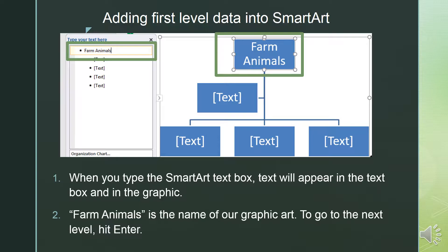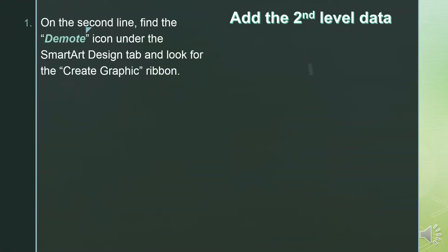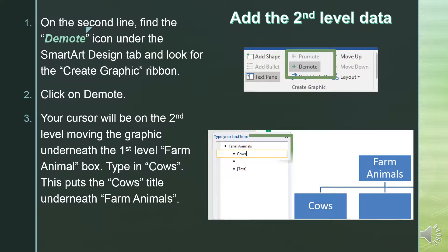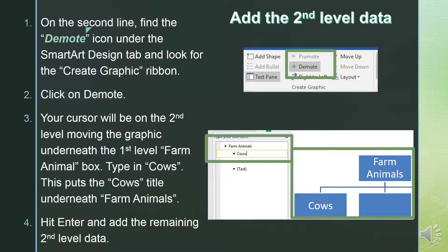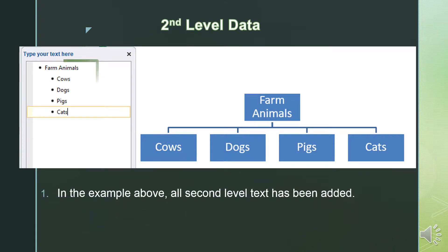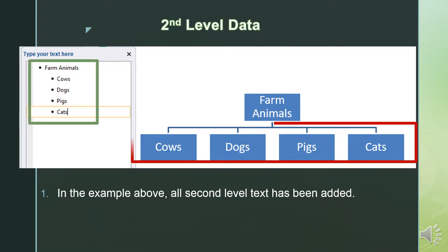To go to the next level, hit enter. On the second line, find the Demote icon under the SmartArt Design tab and look for the Create Graphic Ribbon. Click on Demote. Your cursor will be on the second level, moving the graphic underneath the first level Farm Animal box. Type in Cows. This puts the Cows title underneath Farm Animals. Hit enter and this will add the remaining second level data. All second level text has been added.